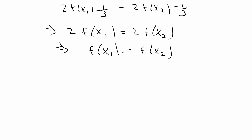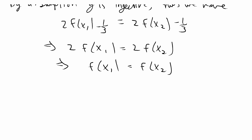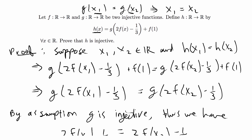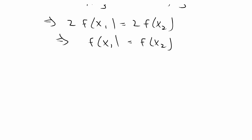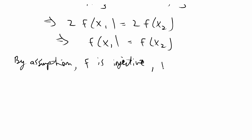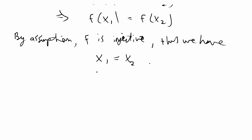We know that f is also an injective function, so we do the same thing: we can take the insides and assume they are equal because f is injective. By assumption, this gives us x1 is equal to x2.